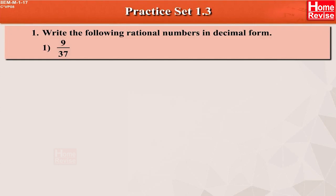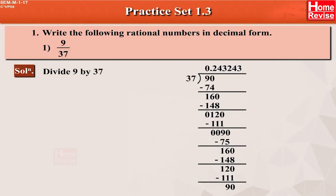Practice set 1.3: Write the following rational numbers in decimal form. Problem 1: 9 upon 37. Solution: Divide 9 by 37. Therefore, 9 divided by 37 gives 0.243243... which is equal to 0.243 recurring.